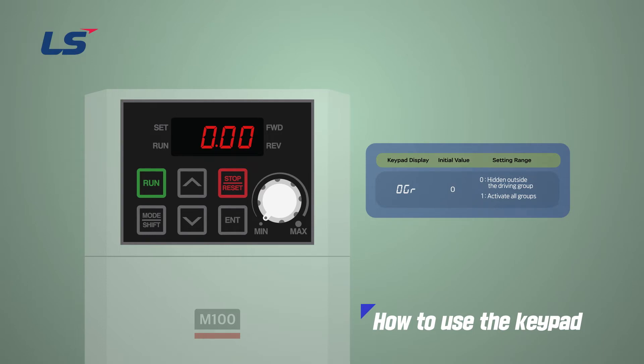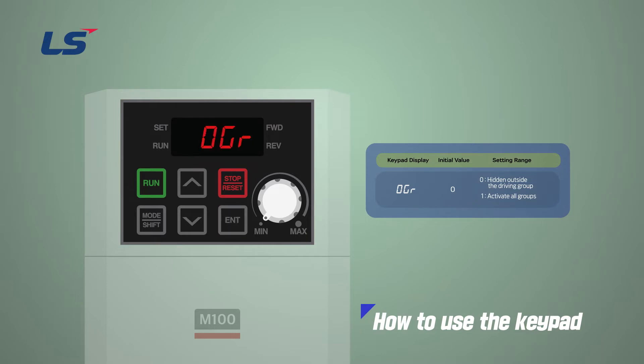Therefore, by pressing the down arrow key and the Enter key, enter 1 in the OGR code of the drive group and press the Enter key twice to release the hiding process. You can then return to the default group by pressing the Mode Shift key.